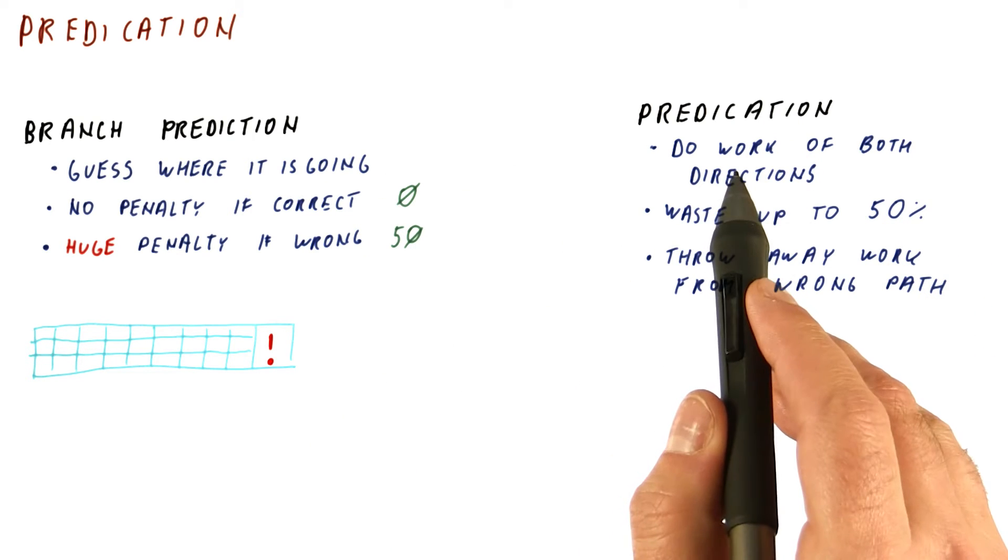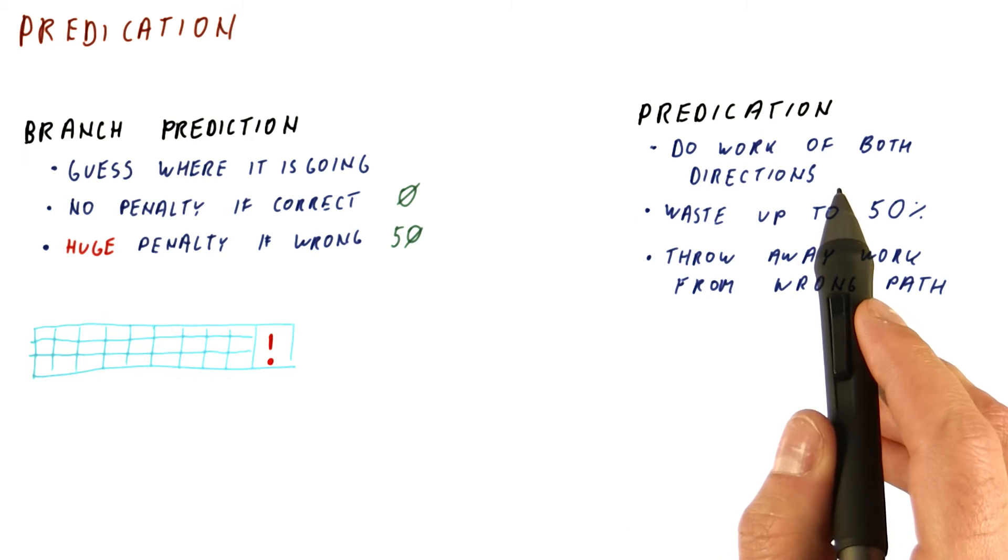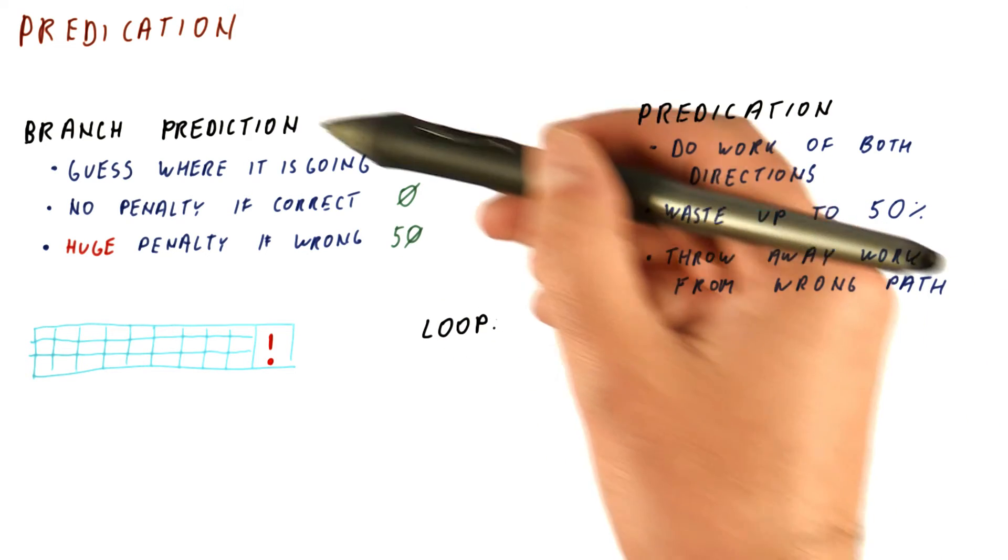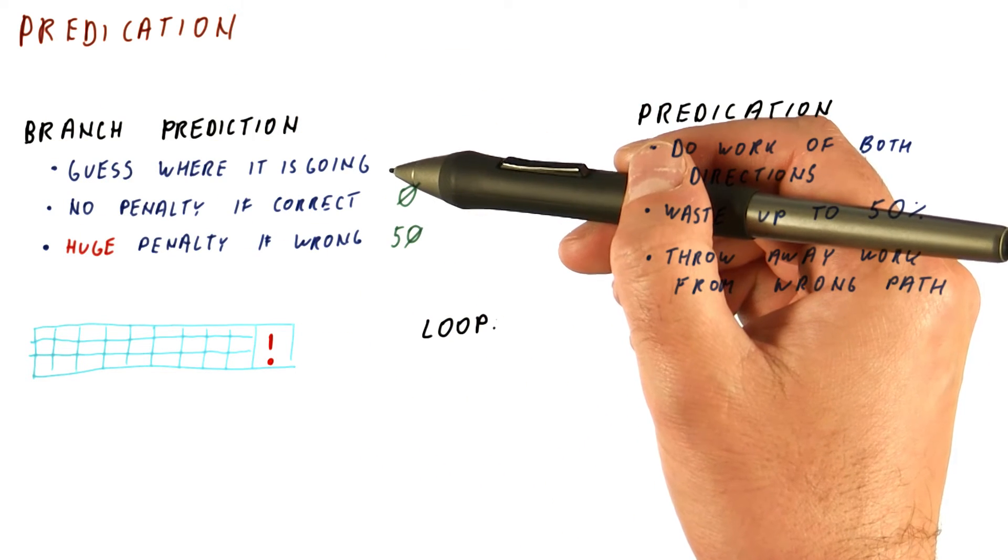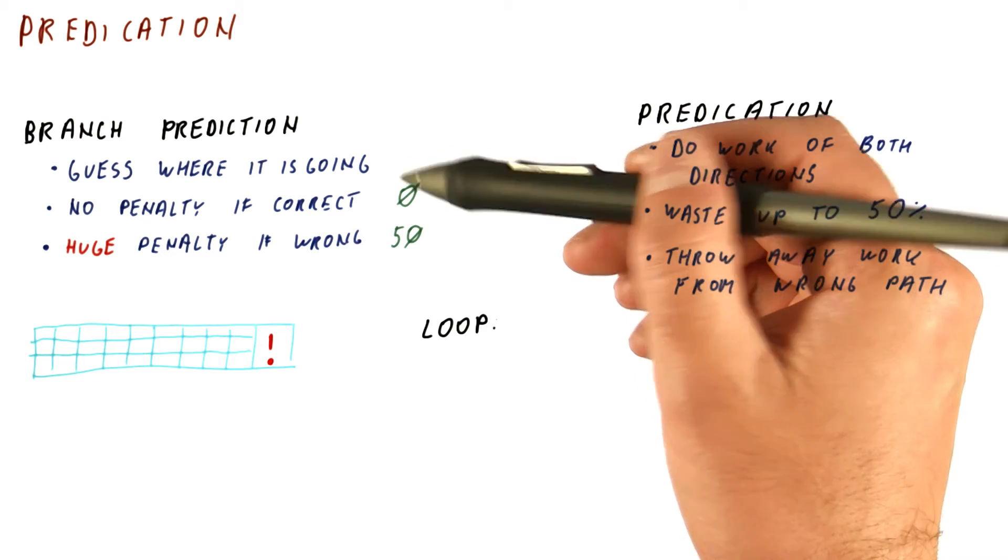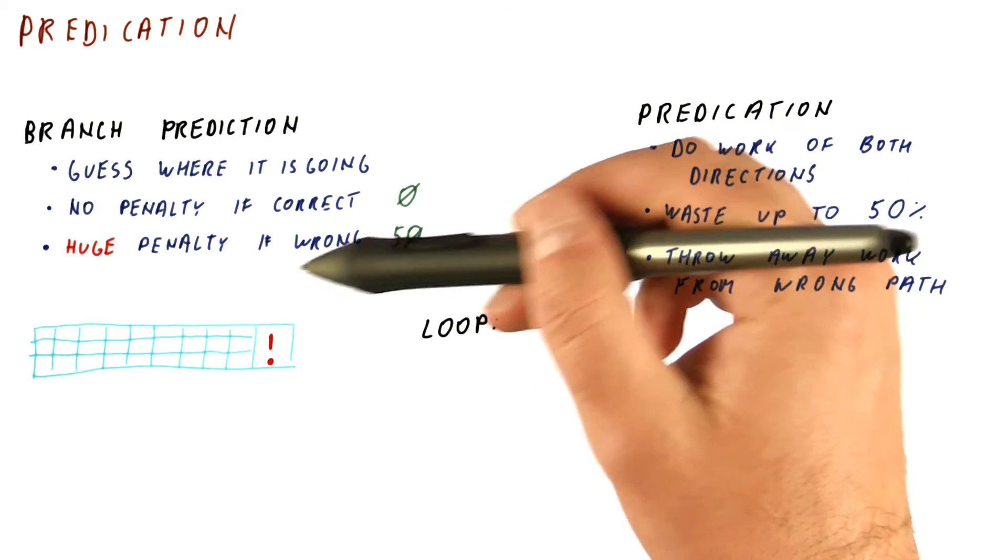Well, let's see how the branch prediction and something like predication compare on different types of conditional branches that we might want to predict. For a loop, usually we want to do branch prediction. Loop branches, the more iterations we have, the more they are predictable.